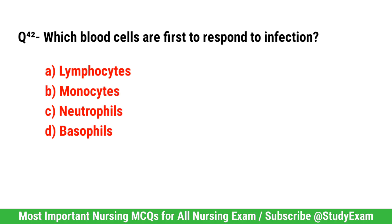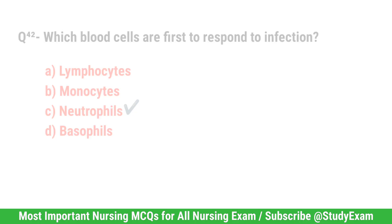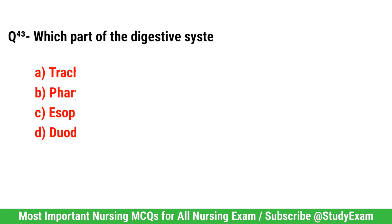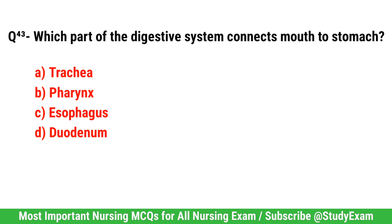Question number 42. Which blood cells are first to respond to infection? Correct option is C. Neutrophil.